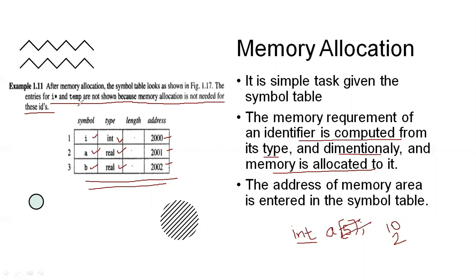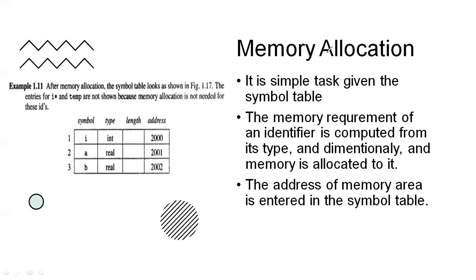i* and temp are stored in machine registers, so there is no need for any symbol table entry for them. Memory allocation is done depending on the type and length of the symbol. Type tells how much memory is required; length applies when it is an array — the size required by the type multiplied by the length gives the total memory locations required for that symbol. This concept is further covered in chapter 2 on assemblers.